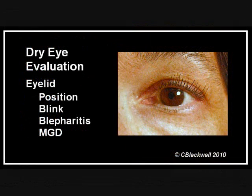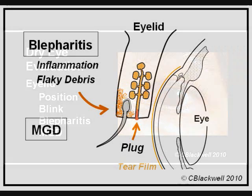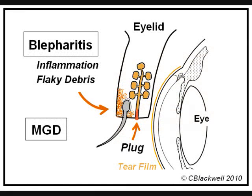We look at the lids to see that they are in good position and that blinking covers the cornea. Sometimes the lid edges will be turned in or out, sometimes they don't close well. We are also looking for other facial problems like rosacea and seborrhea. Looking at the lids through the microscope, we are looking at two areas. At the front of the lid, we are looking for signs of blepharitis — redness of the skin and debris like flakes of skin around the base of the lashes. At the back of the lid, we are looking to see if the openings of the meibomian glands are open or plugged.